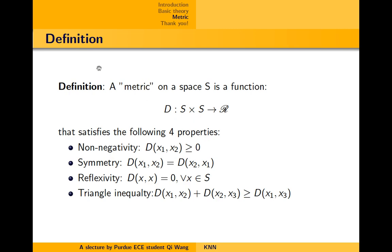I'll start by the definition of the metric. A metric on the set S is a function which projects from S cross S to the real number set. And this function satisfies these following properties: non-negativity, symmetry, reflexivity, and triangle inequality. Once a function meets those properties, it can be called a metric. Then, based on the definition of the metric, we can define all kinds of distance.